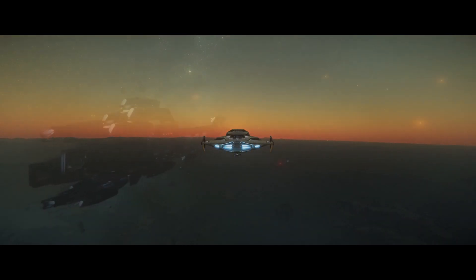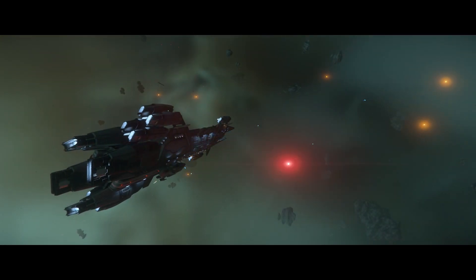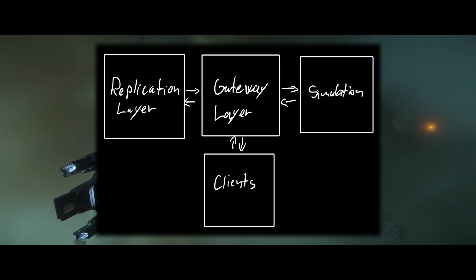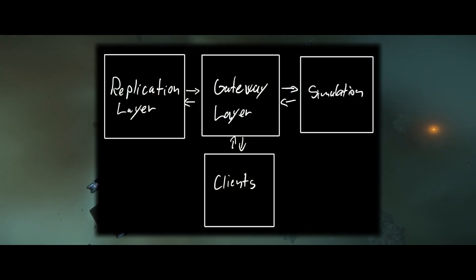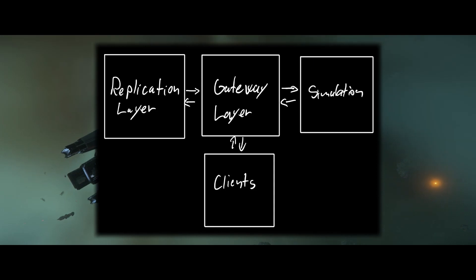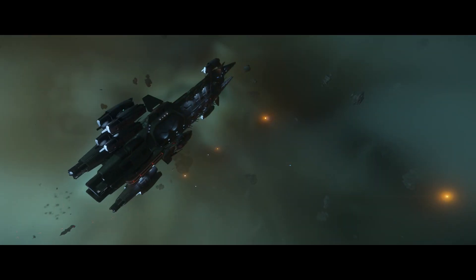The final piece of the puzzle is the Gateway layer. The Gateway layer is essentially a service that will be directing and routing traffic between different clients and services in the replication layer.